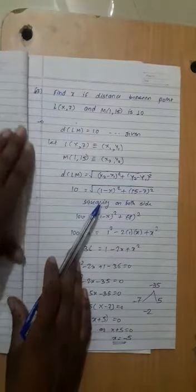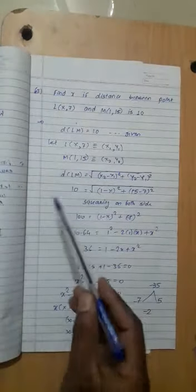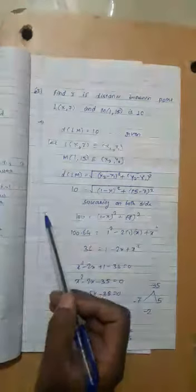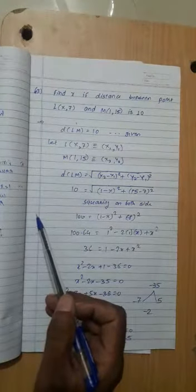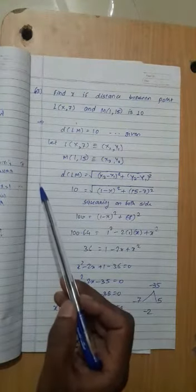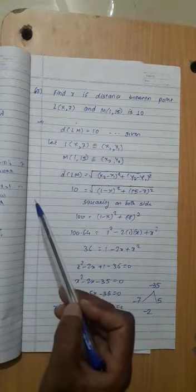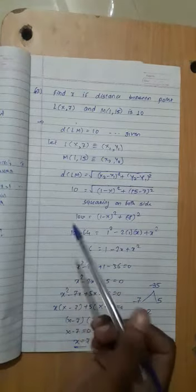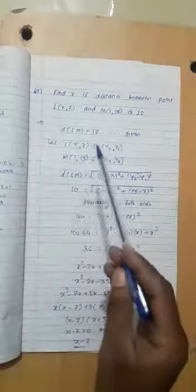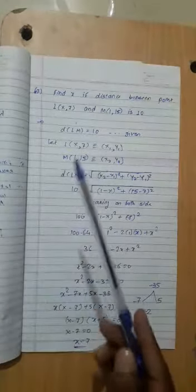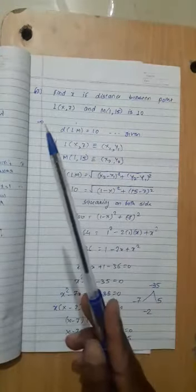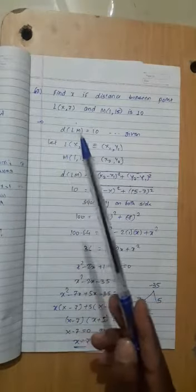Next problems: prove it's a right angle triangle, prove it's a rhombus where all sides are equal distance, and parallelogram where opposite sides are equal. Find x if distance between these two points is 10.